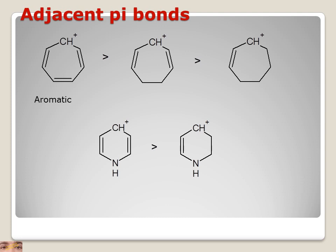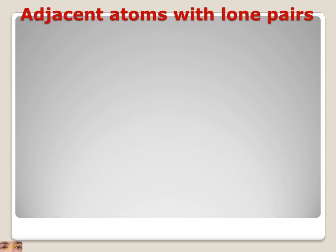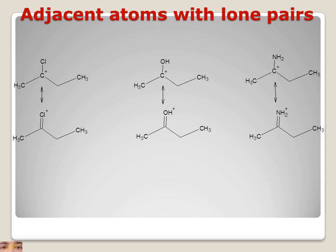Similarly, following the Hückel rule is another structure where the two electrons of nitrogen — the lone pair of nitrogen — contribute towards the ring, leading to a stabilized carbocation.